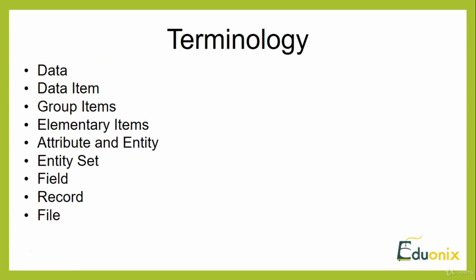Next comes the field. A field is a single elementary unit of information representing an attribute of an entity. Whatever field you have, it includes an elementary unit of information, which is very useful from an algorithm point of view — whether for sorting or otherwise. A field represents an attribute of a particular entity.